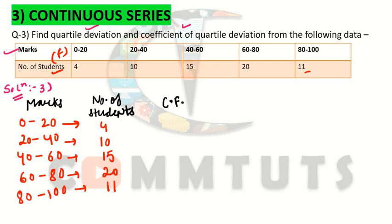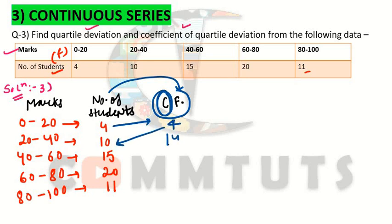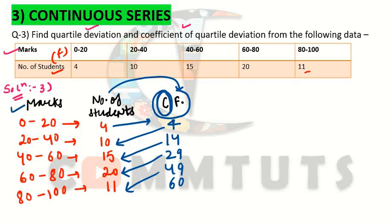The main step is: when we have a continuous series, we must convert frequency to cumulative frequency, which means successive addition. The cumulative frequencies are: 4, then 4+10=14, then 14+15=29, then 29+20=49, and finally 49+11=60. First, note down the data as given in the question, then convert frequency to cumulative frequency.